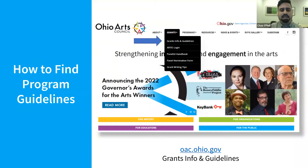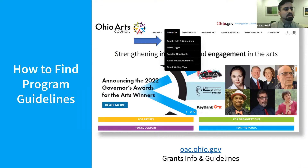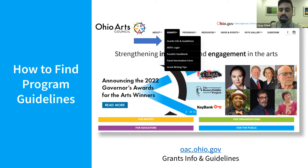Moving on to how to find the program guidelines. Think of these program guidelines as instructions — essentially what is being asked of the applicant and how to submit the materials. First, we will go to the OAC website at oac.ohio.gov. On the screen, we are showing a screenshot of the OAC website homepage. In the top banner, you can locate the Grants tab. When the drop-down menu appears, select Grants Info and Guidelines.